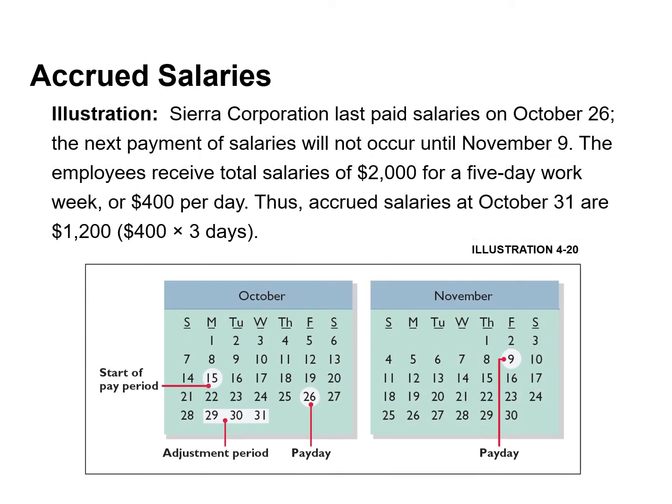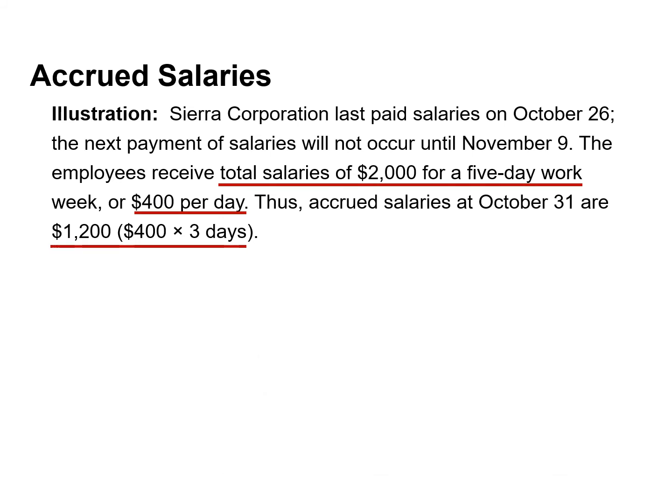Companies pay for some expenses, such as employee salaries and wages, after the services have been performed. Sierra paid salaries on October 26th for its employees' first two weeks of work. The next payment of salaries will not occur until November 9th, so we need to record the three working days in October: October 29th, 30th, and 31st. The employees receive total salaries of $2,000 for a five-day workweek, or $400 per day.